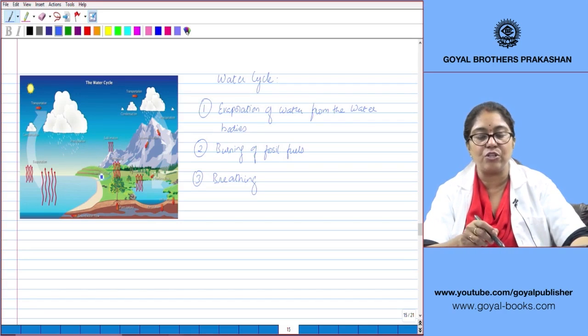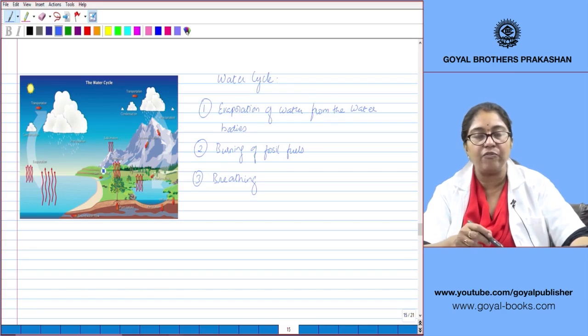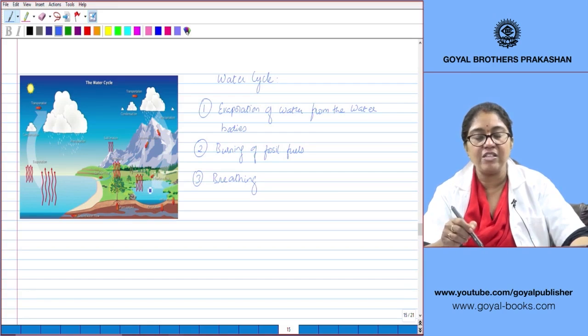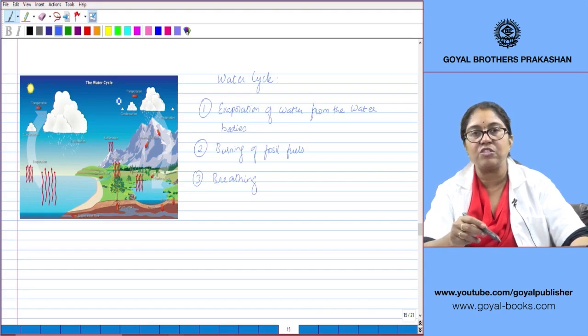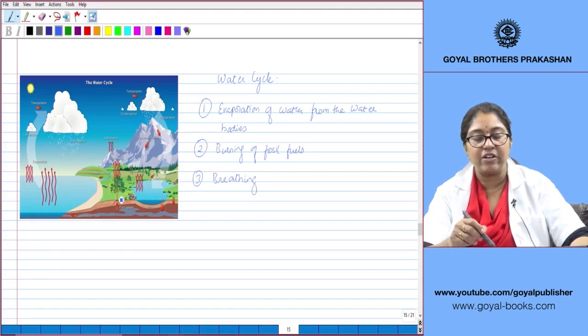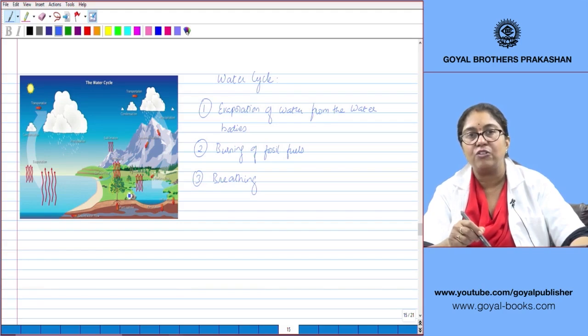This precipitation falls down as rain, may fill into the water bodies, or may flow on the surface as surface water. This water from the water bodies is again evaporated, enters the atmosphere, condenses, and again comes down as rain.